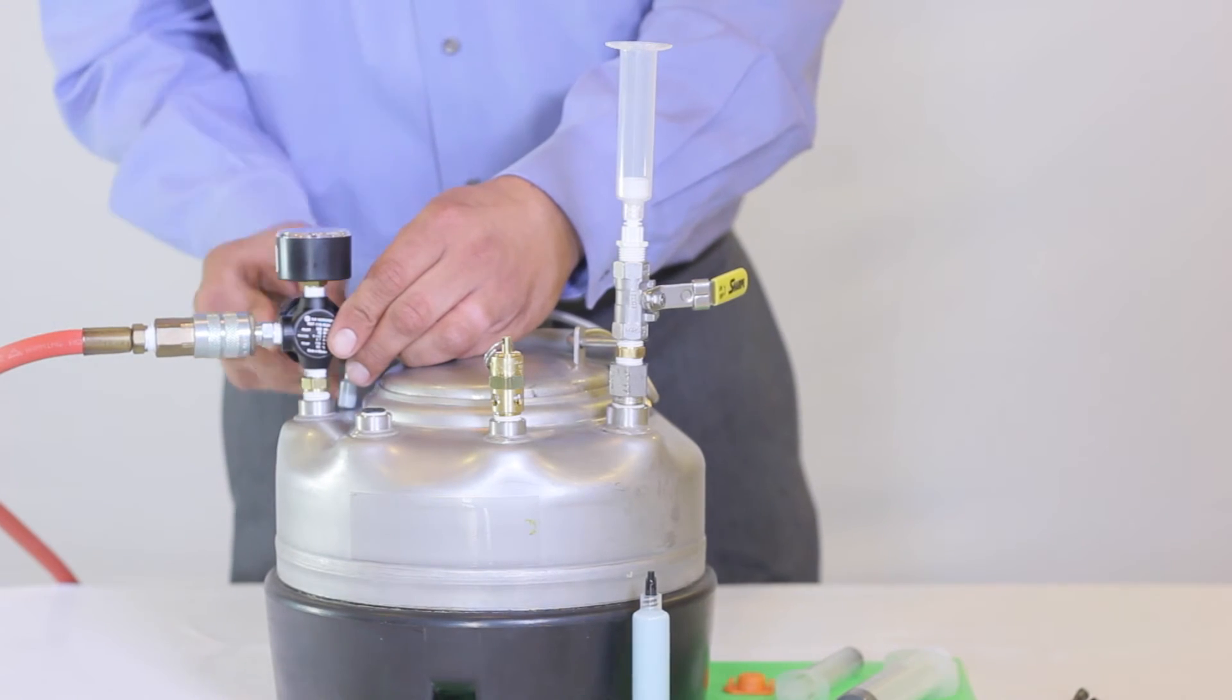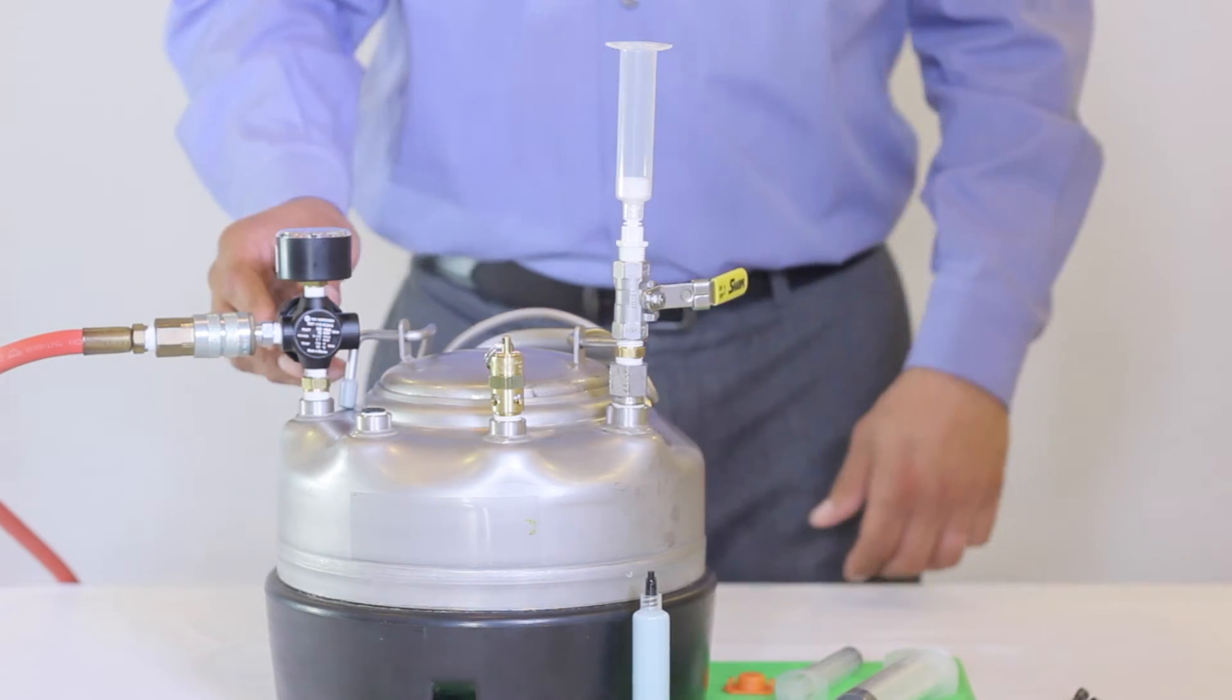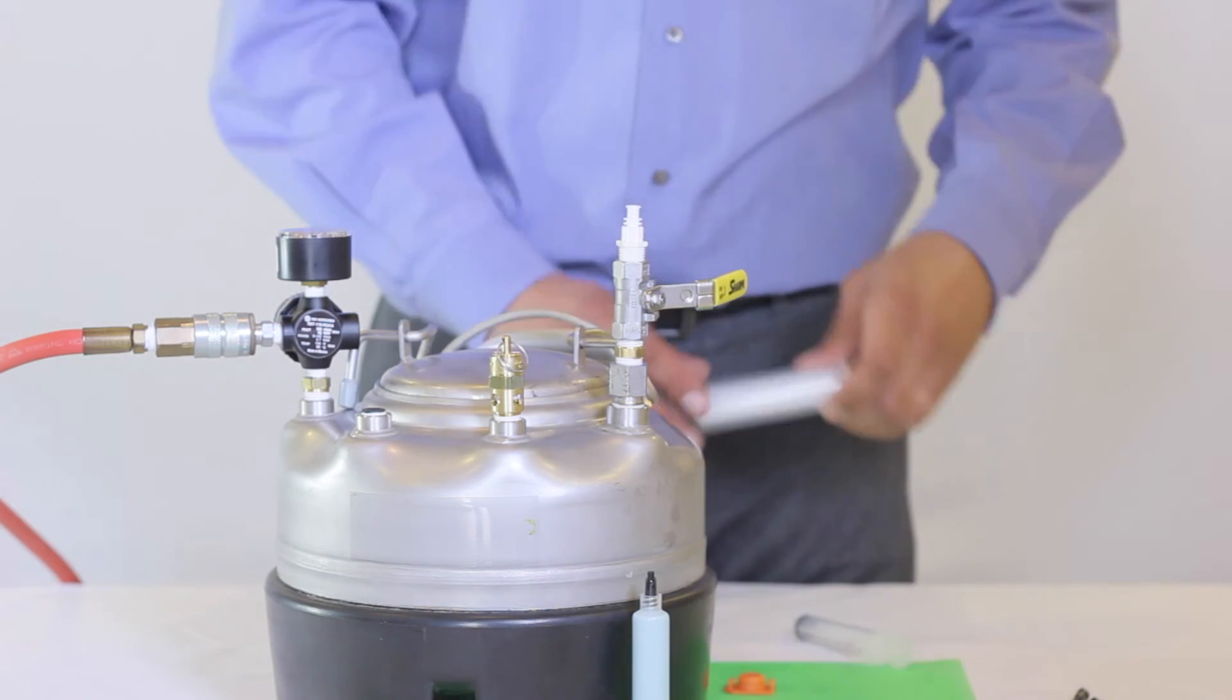The tank has a regulator and gauge of 100 PSI with a 1/8th Hansen fitting to connect to a dry air source.